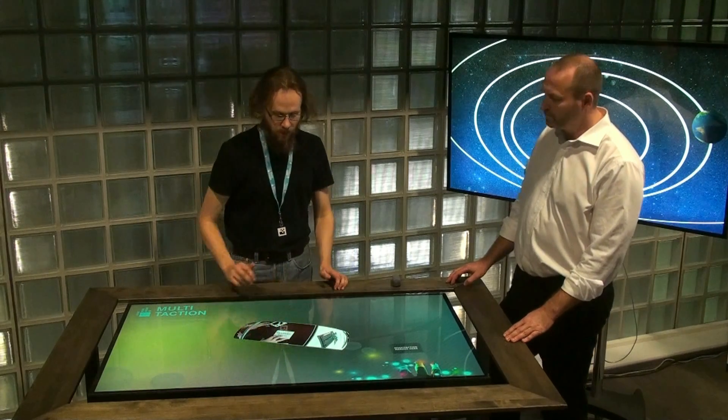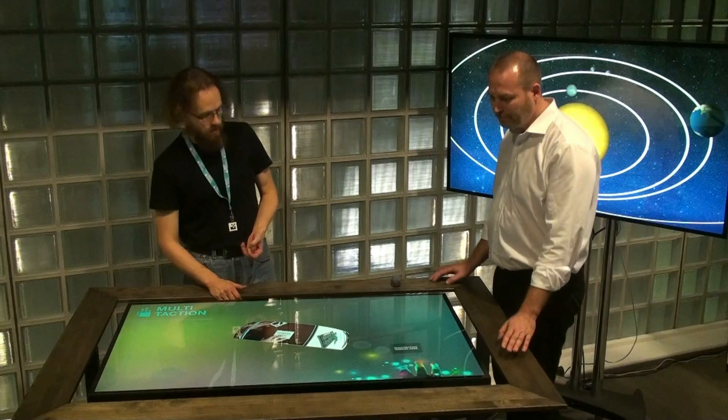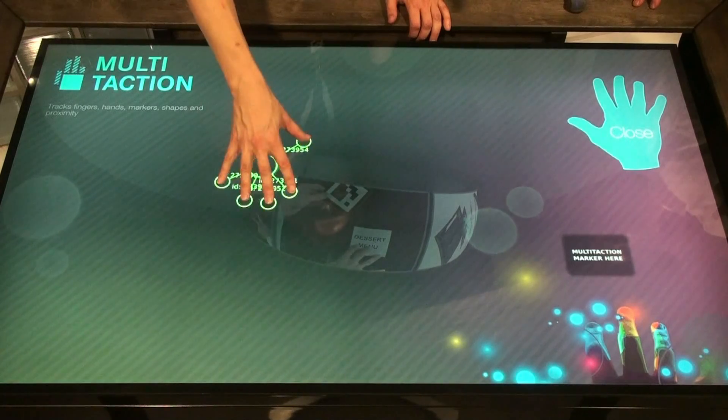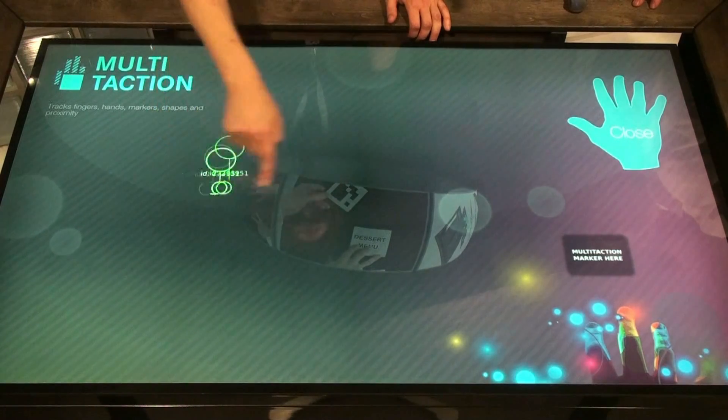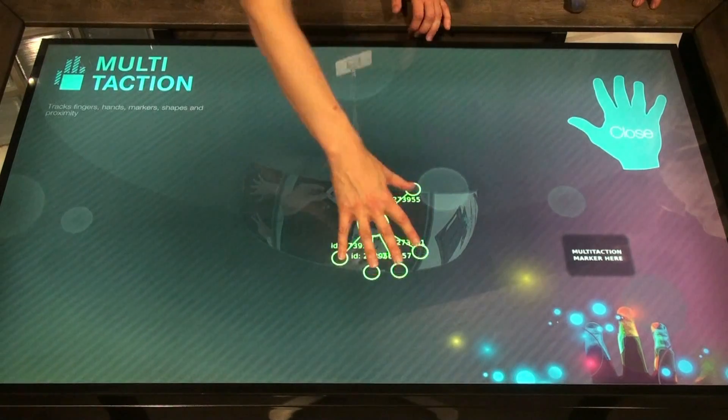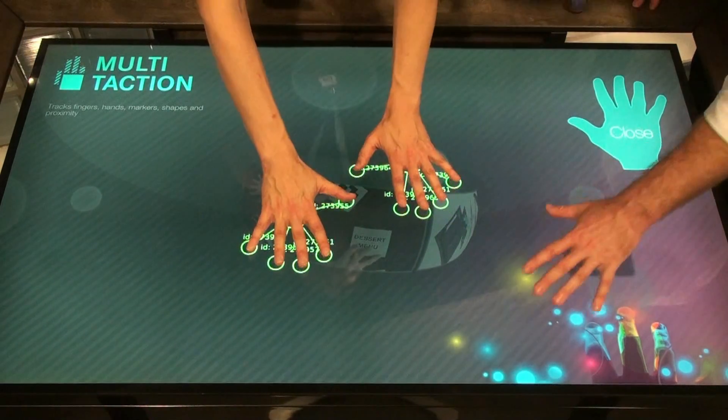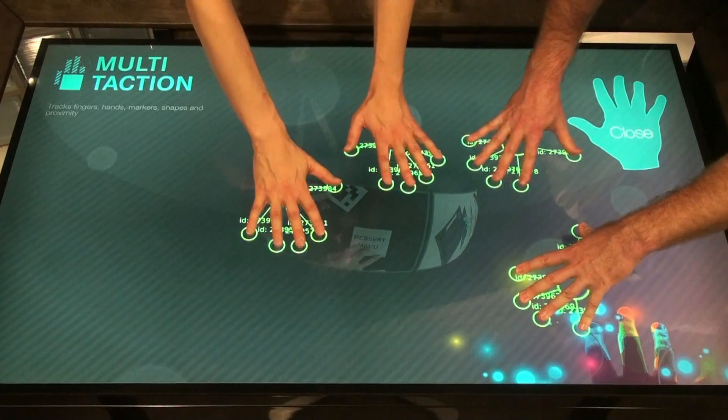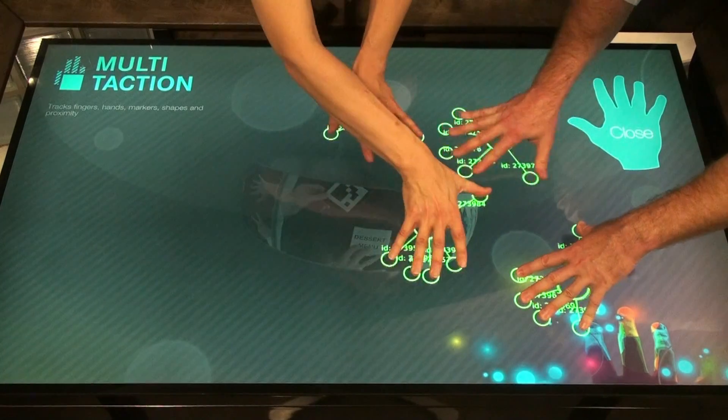I could maybe show you a bit about how this performs. The basic thing here is that obviously tracking users' fingers. You can track any number of those, it's in practice unlimited. Usually, the only limit really is how many people you can fit around the display.